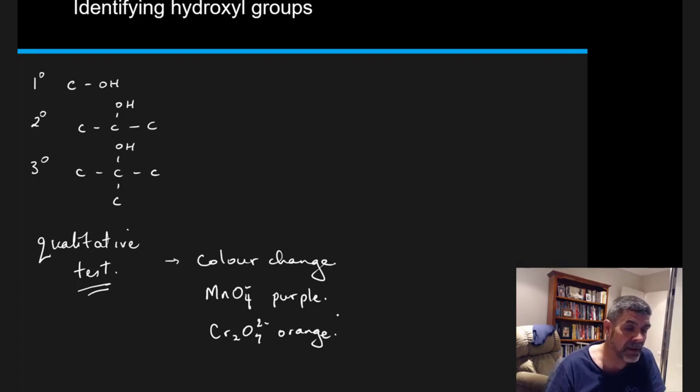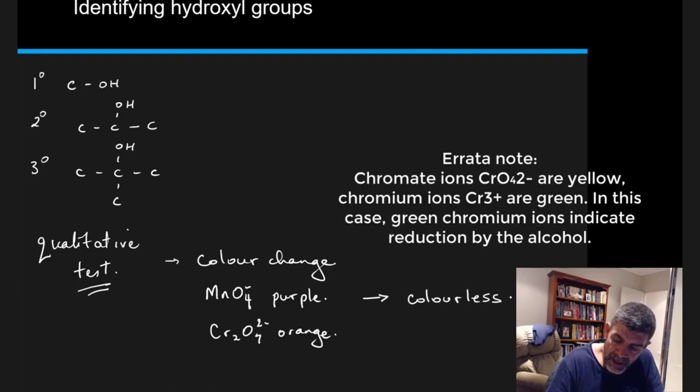It is in your data table, so in your table of standard reduction potentials. So it is certainly one that you can use theoretically, and the color changes that we would expect to see for a positive result are colorless. If we're using the permanganate ions from purple to colorless and orange to green, the dichromate ions is going to be what you're going to find for the reduction of the dichromate ion.